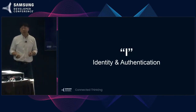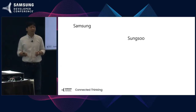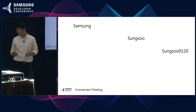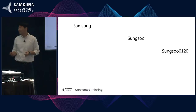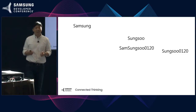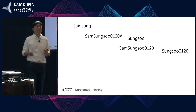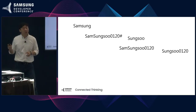Let me jump right in and begin by introducing myself. My name is Sung Soo, and I obviously work for a company called Samsung. My birthday, if anyone's interested, is January 20th — so it's 0120. There's a striking similarity between my name and the company name, so you could put them together and say Samsung Soo 0120. Nowadays I even put a special character next to it — Samsung Soo 0120 sharp. These are actually variations of passwords I've been using for the past 10 years or so.